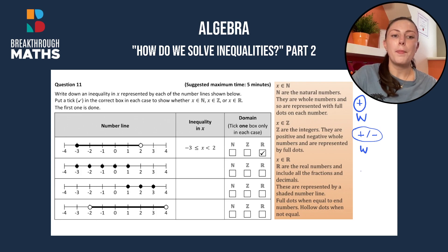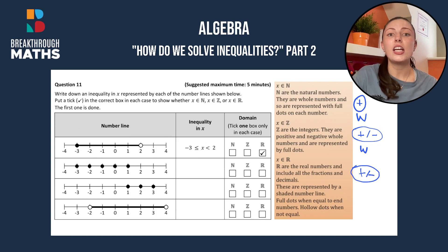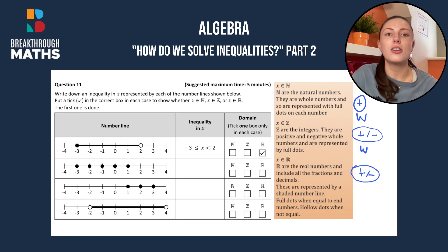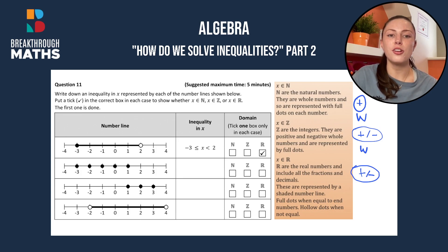Real numbers are positive or negative, but they are not whole numbers — they can include fractions and decimals. For example, minus 0.127 is a real number because it has a decimal; it is not a whole number. Natural numbers are denoted by N, integers by Z, and real numbers by R.